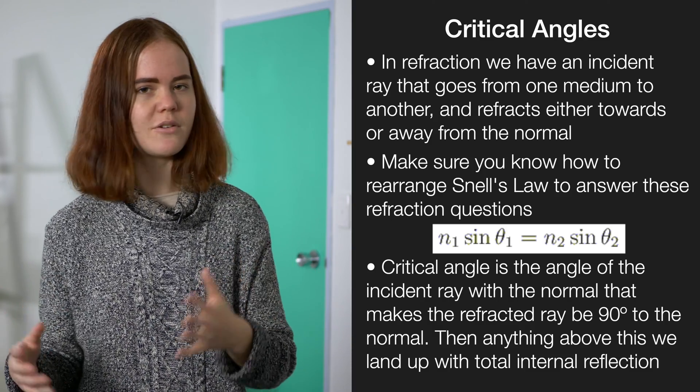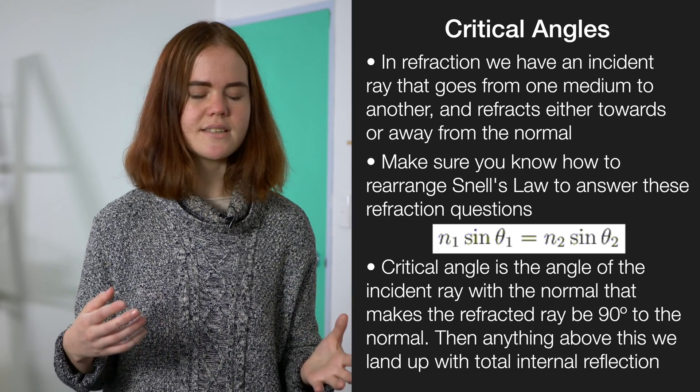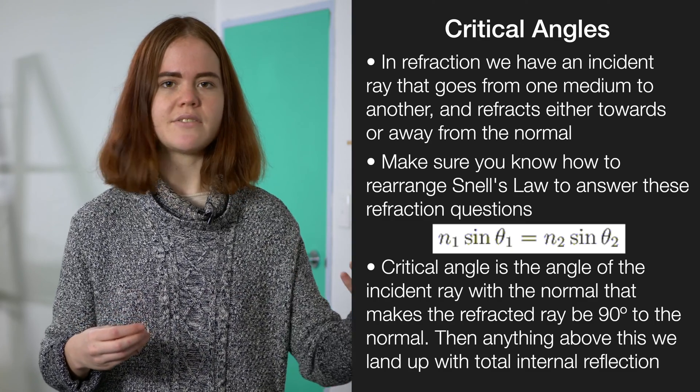Now, hopefully this is all information that you already know. The trick is remembering all of it and putting it together. So, for example, let's say that the question said, the critical angle between glass and air is 47 degrees. What is the refractive index of glass?